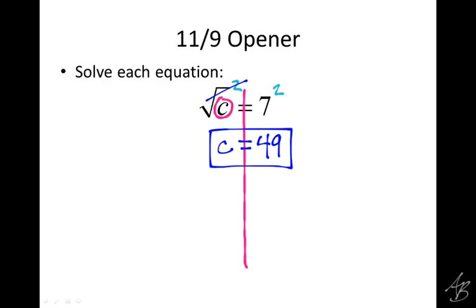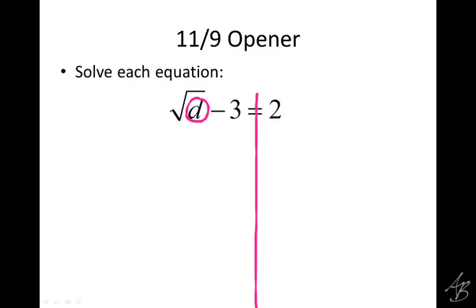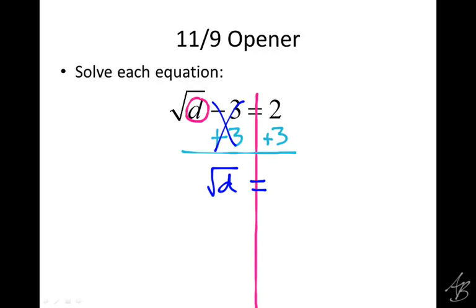Now we can do something similar in this next problem, but to get d by itself I have two things to get rid of: the square root and the minus 3. We should get rid of the minus 3 first because the square root is just over the d. So we add 3 on both sides — the 3s cancel, leaving the square root of d, and on the right 2 plus 3 is 5. So the square root of d equals 5.